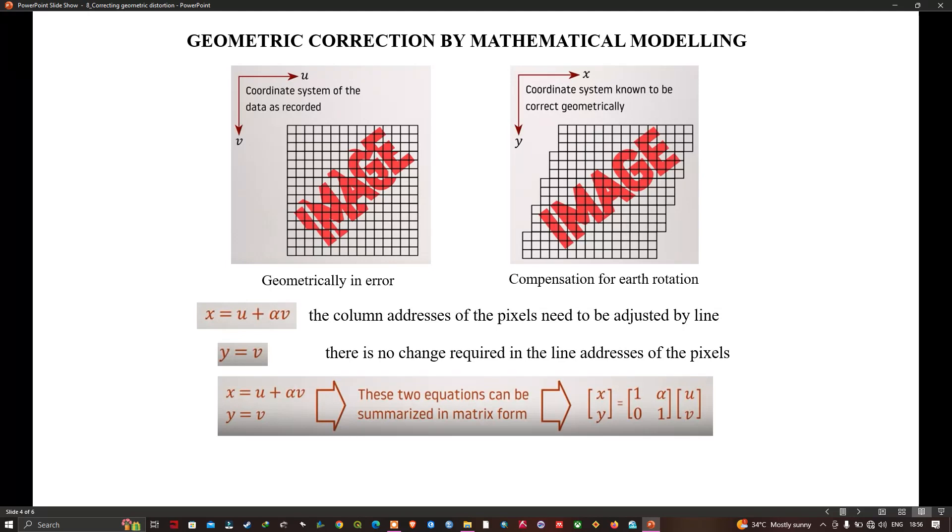You can see from the equation here: x equals u plus alpha v. The column address of the pixel needs to be adjusted by line, and for y equals v, there is no change required in the line address of the pixels.